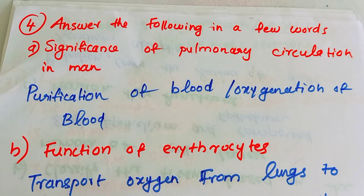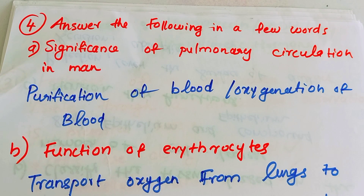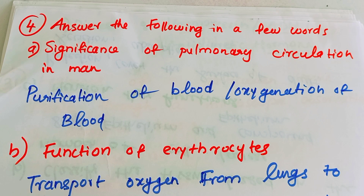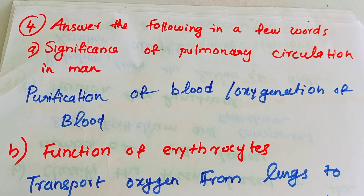Answer the following in a few words. The significance of pulmonary circulation in humans: it is responsible for the purification of blood and oxygenation of blood. Pulmonary circulation carries blood to the lungs for gas exchange.